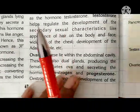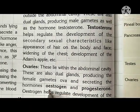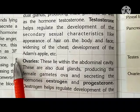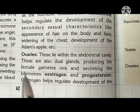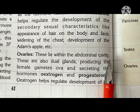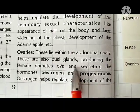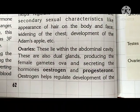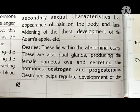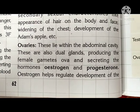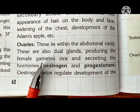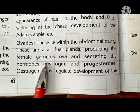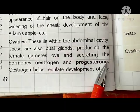In females, the ovaries are the endocrine glands present in the abdominal cavity. The hormones secreted by the ovaries are oestrogen and progesterone. The ovaries are also dual glands: the duct part produces female gametes (ova), and the non-duct endocrine part secretes oestrogen and progesterone.